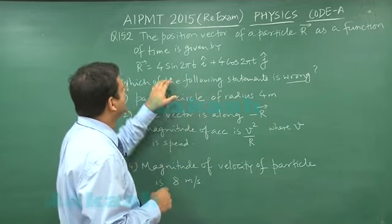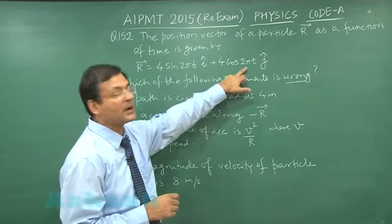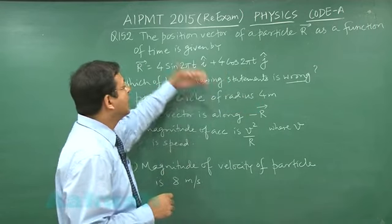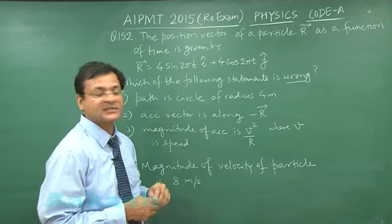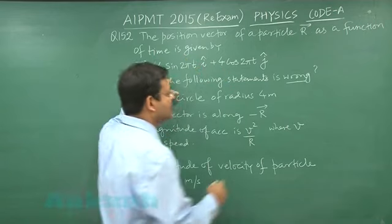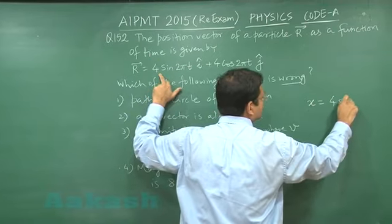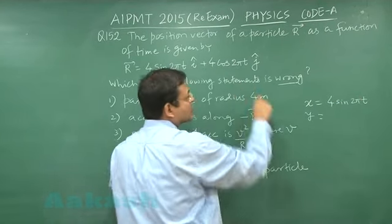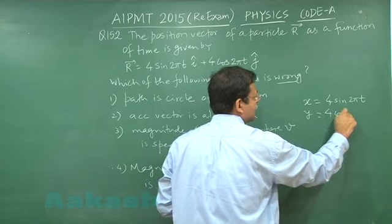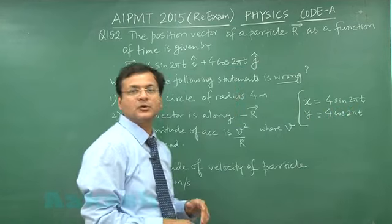If you compare this position vector, you can say that this is the x which has been given and this is the y part of the motion. i and j are standard notations, they are the unit vectors in x and y direction. If you try to solve it by comparison, you can say x is equal to 4 sin 2π t and y is equal to 4 cos 2π t. This is the comparison equation you can use.